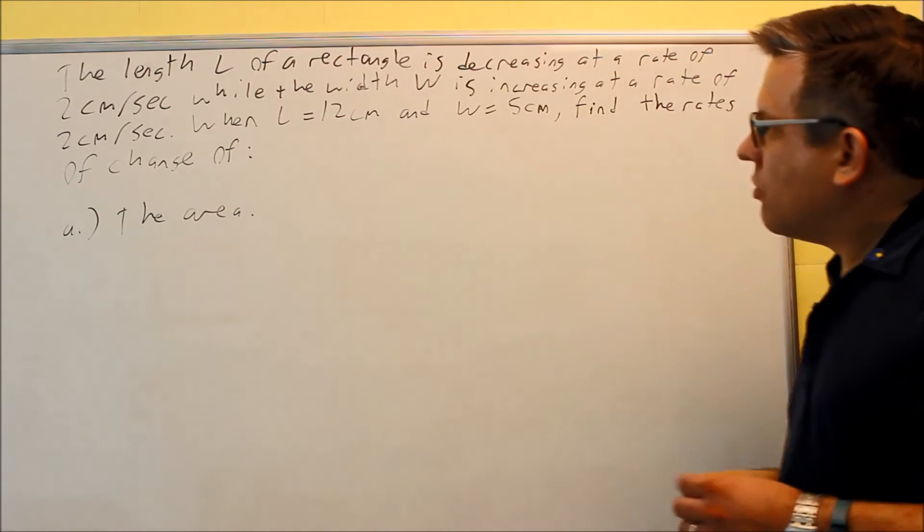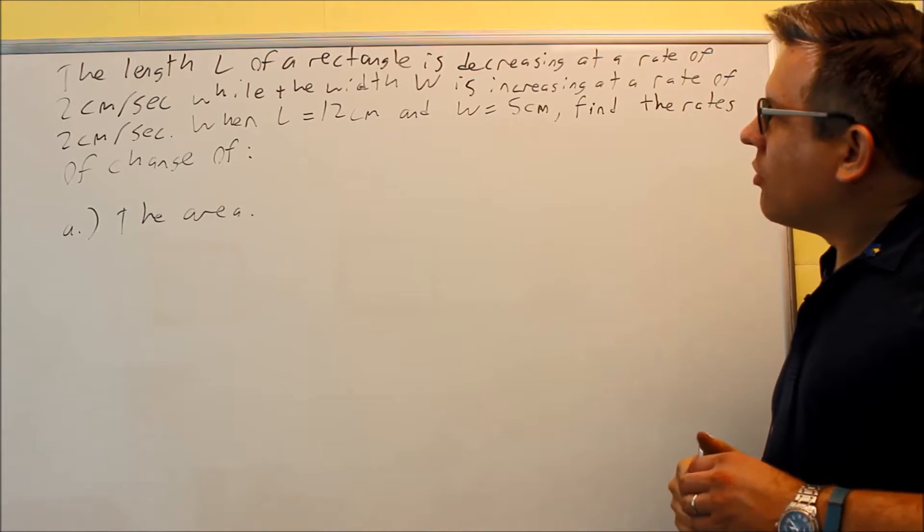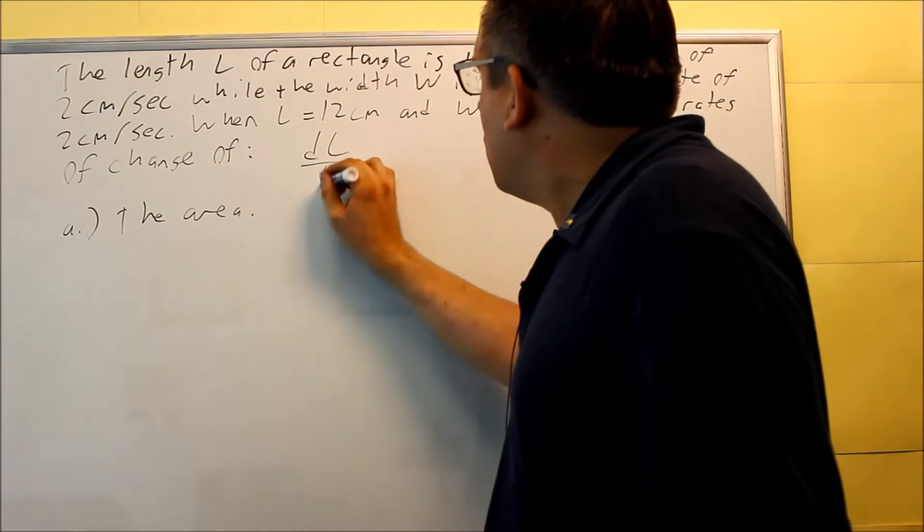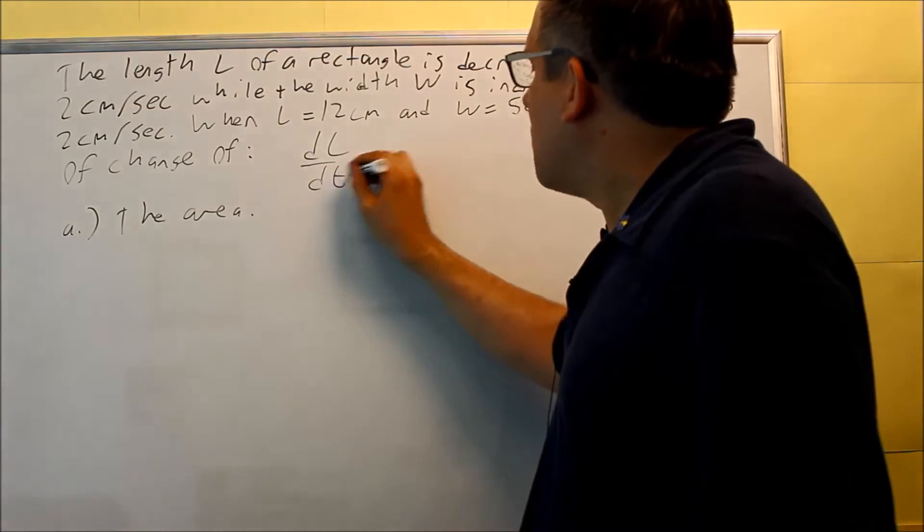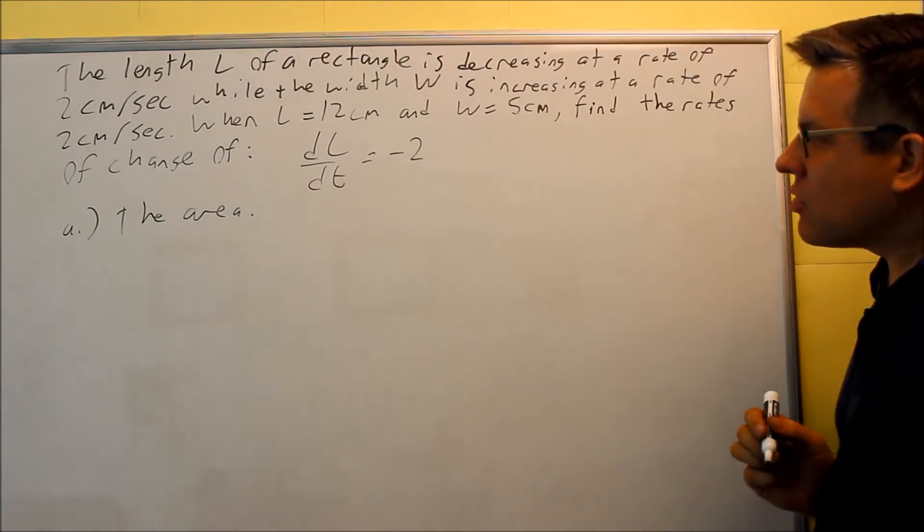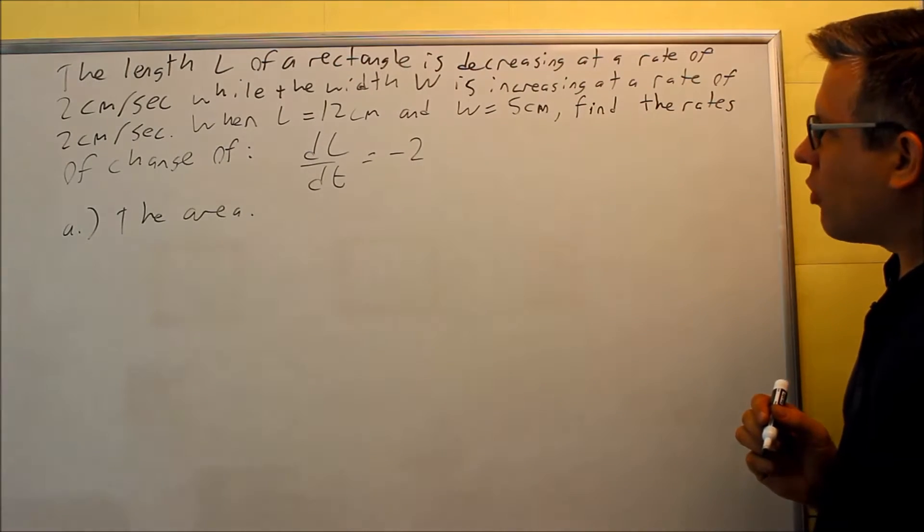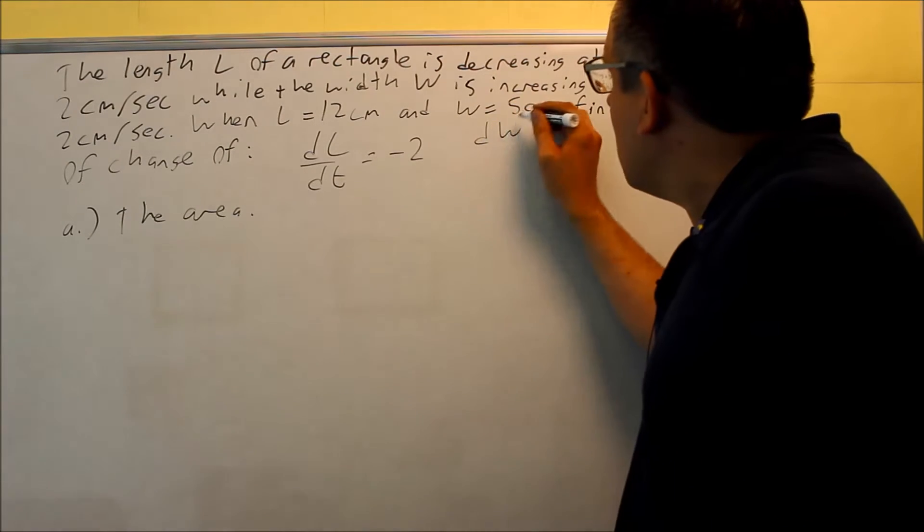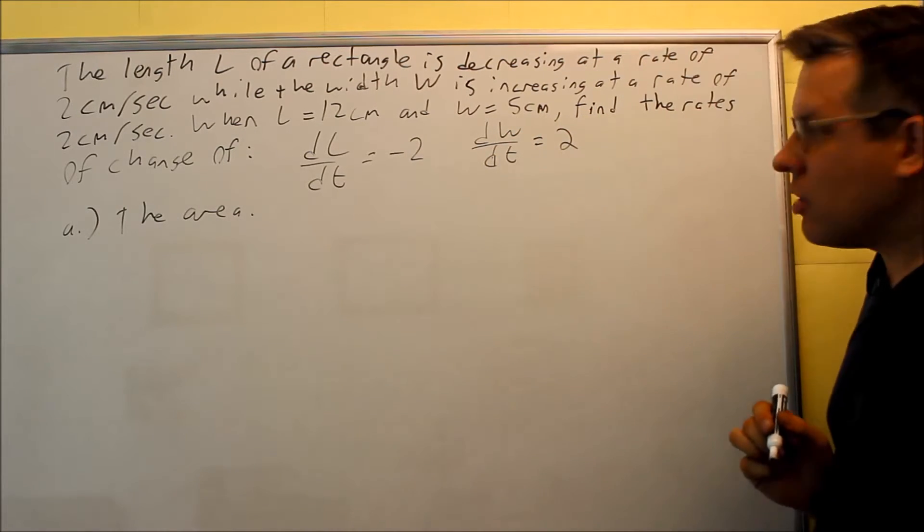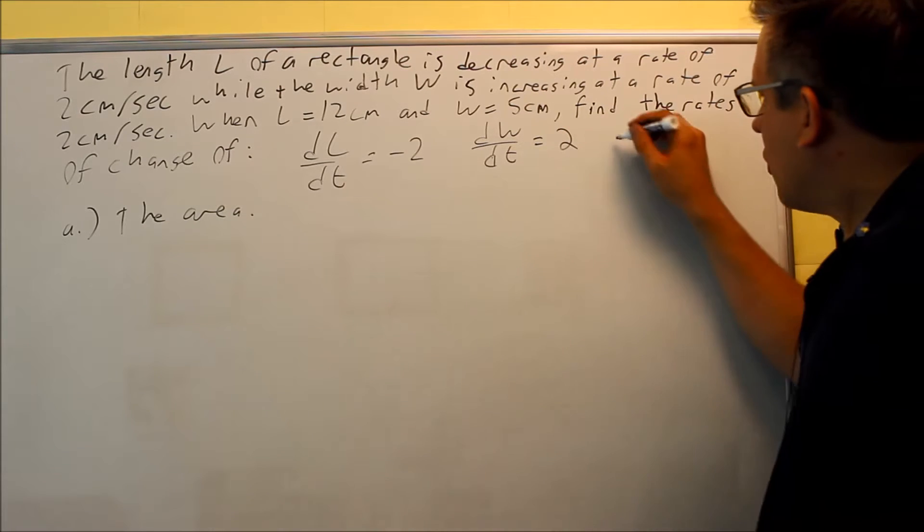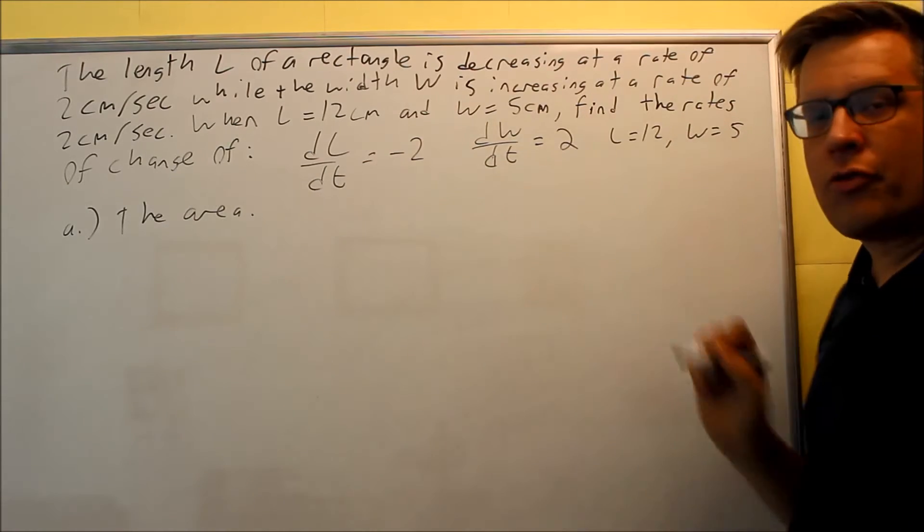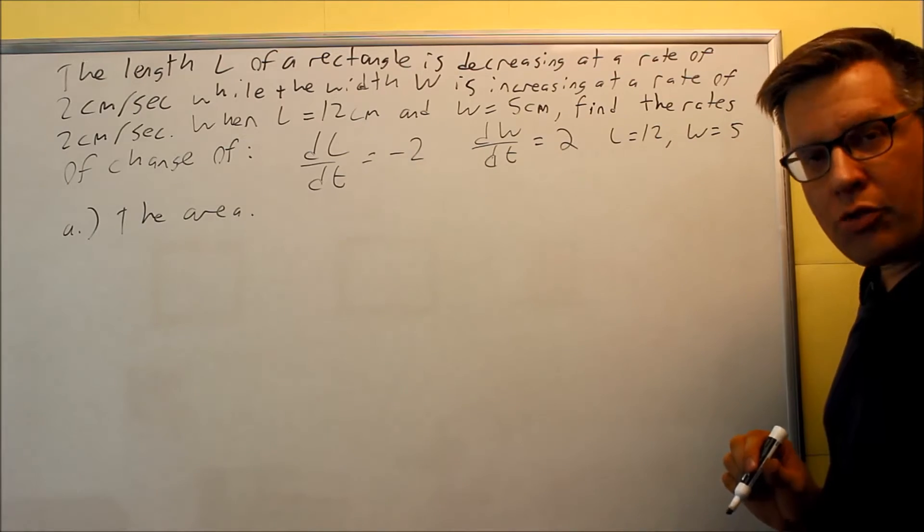Let's read through this information. The length of a rectangle is decreasing at a rate of 2 centimeters per second. That is dL/dt, and because it says specifically decreasing, we're going to put negative 2 there. The width is increasing at a rate of, that is dW/dt, and that is given as positive 2 because increasing. We also have L equals 12, W equals 5. This information is what I pulled from the problem. We're going to use this for all three parts.